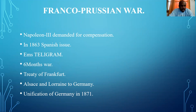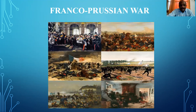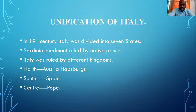Bismarck succeeded and declared war against France. That war continued for six months, after which Napoleon was defeated and captured with nearly one lakh army, and he surrendered. They concluded with the Treaty of Frankfurt. In that treaty, Alsace and Lorraine were added to Germany. At last, in 1871, this unification process was completed and the Franco-Prussian war ended, with Bismarck completing the unification of Germany.